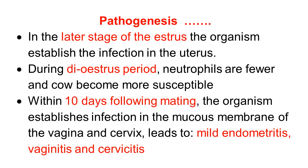Within 10 days following mating, the organism establishes infection in the mucous membrane of the vagina and cervix. Within 10 days after mating the number of neutrophils decreases again, allowing the organism to establish infection in the vaginal and cervical mucosa. The organism produces mild endometritis and vaginitis.